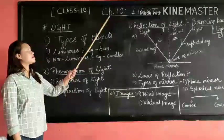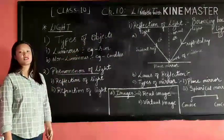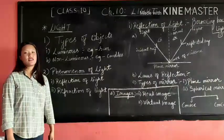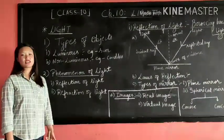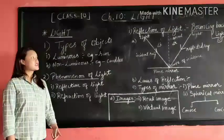Hello everyone, today I'll be explaining chapter 10, Light for Class 10. Light plays a very important role in our life because it helps us to see the objects around us. It is the light that makes things visible.